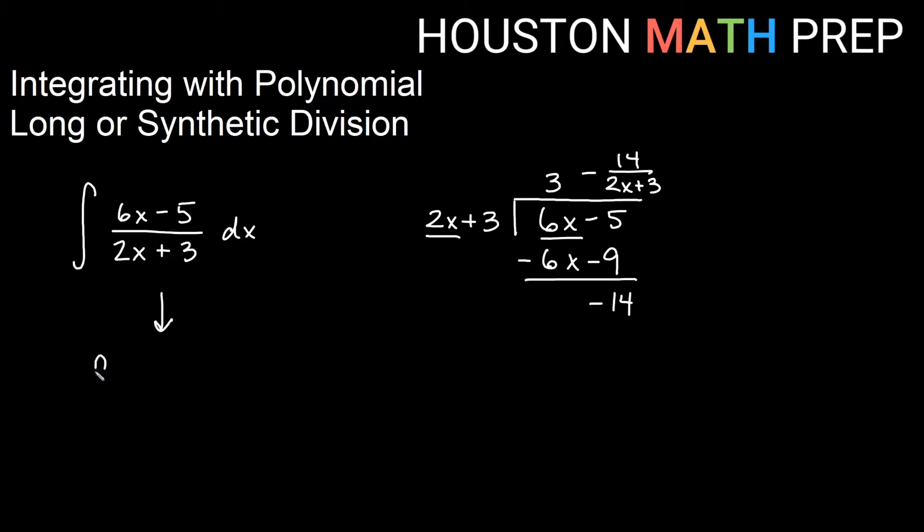The way that we will rewrite this integral is we will be integrating 3 minus 14 over 2x plus 3. The reason that's nice is because these are going to end up being power rules, or you might have a ln rule, sometimes an inverse tangent rule. Integral of 3 dx is just 3x. If you do a u substitution here, u is the bottom, the derivative of that would be 2. So then the top there is just going to be 7 times du.